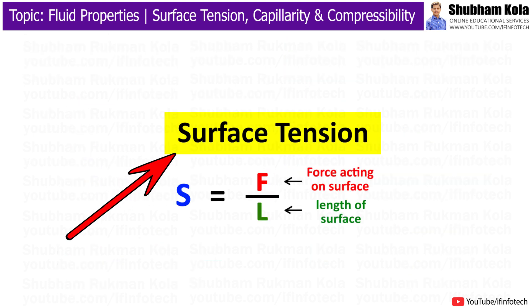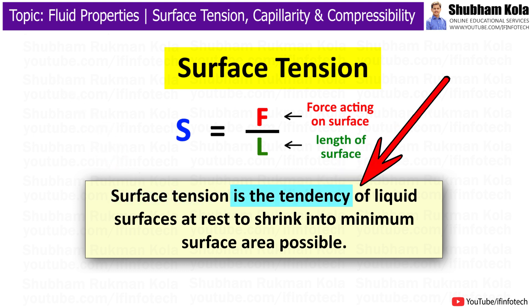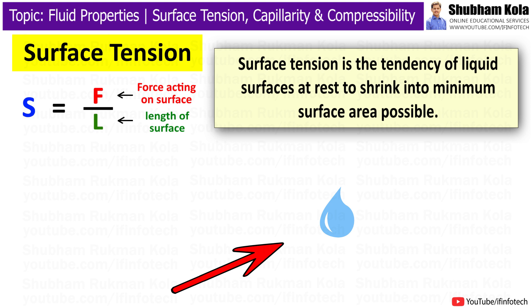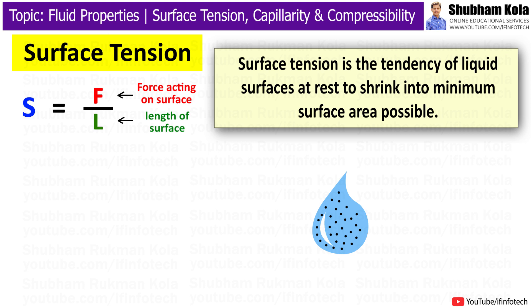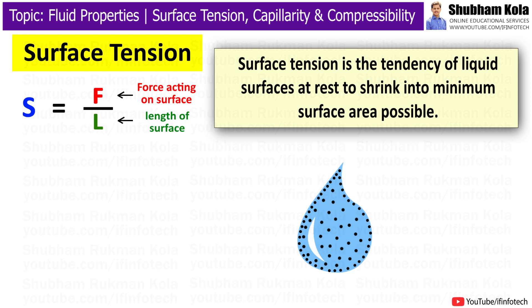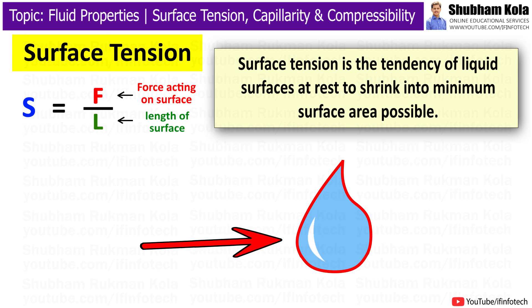The first topic is surface tension. Surface tension is the tendency of liquid surfaces at rest to shrink into the minimum surface area possible. For example, small droplets of fluid are spherical due to surface tension, because molecules of water tend to stick together due to intermolecular force. The molecules located on the surface of the droplet contain higher energy and try to push other molecules to the centre, making the droplet take a spherical shape, which has the least surface area. That's why droplets of water are spherical.